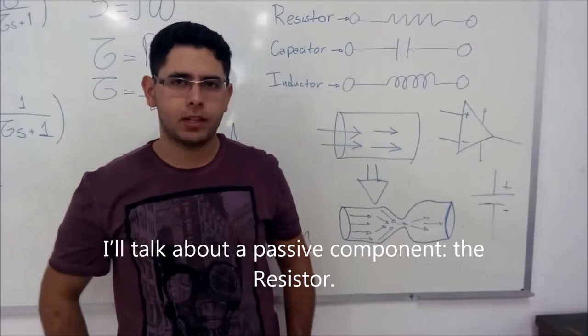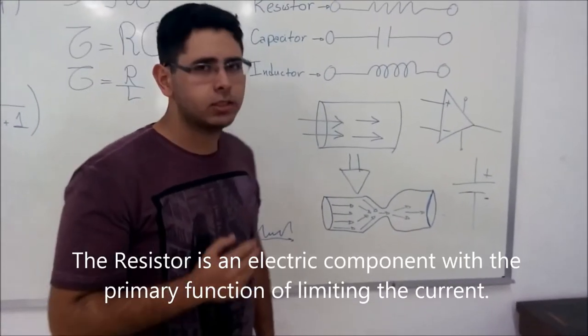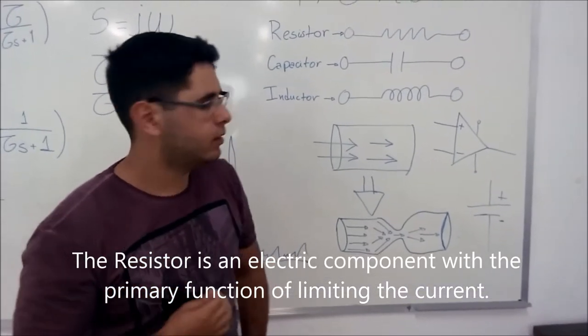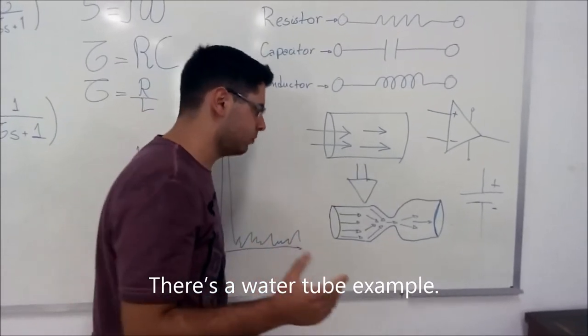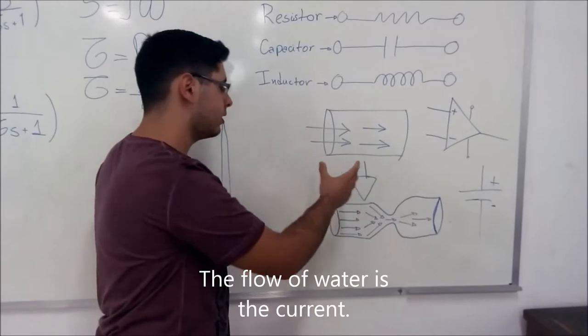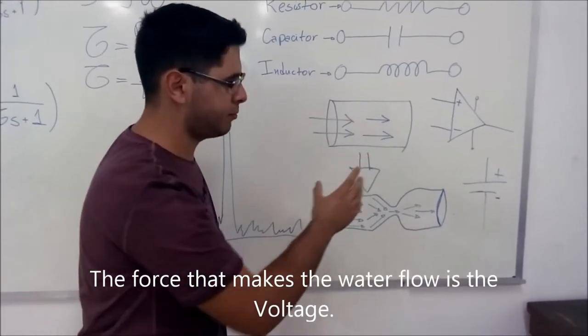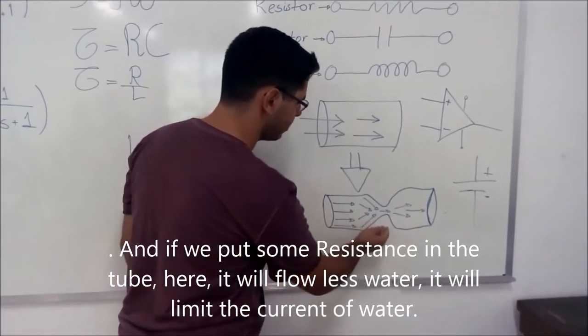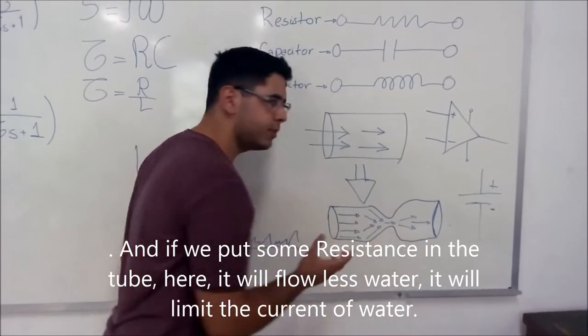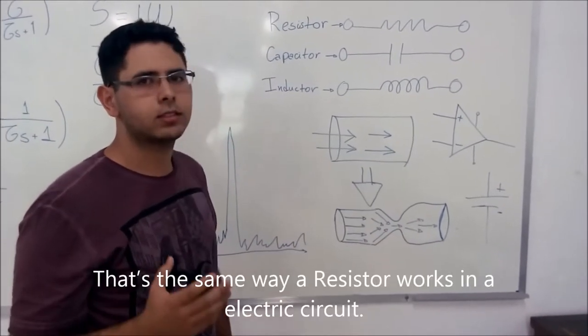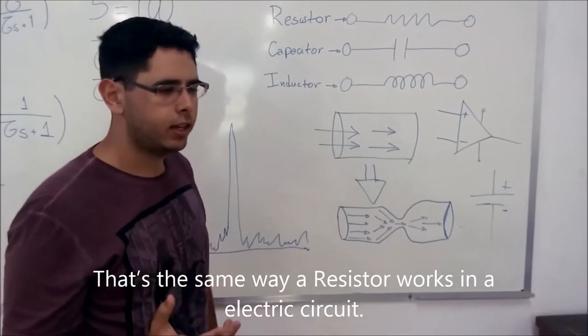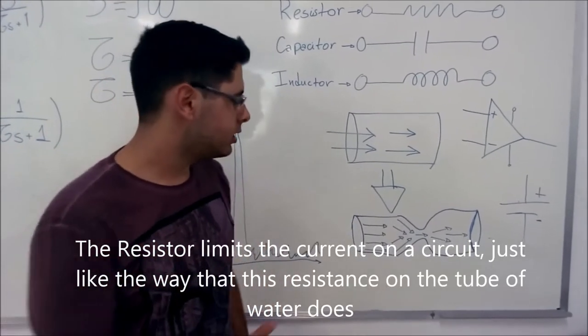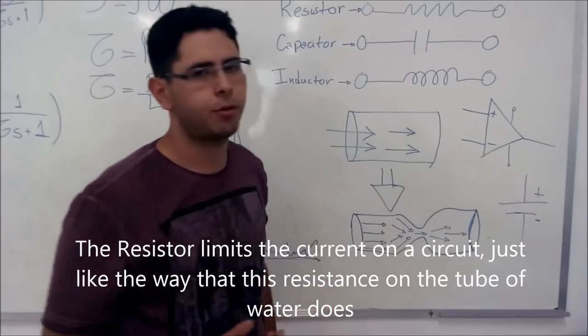Let's talk about a passive component, the resistor. The resistor is an electric component with the primary function of limiting the current. We can use a water tube as an example. The flow of water is the current. The force that makes the water flow is the voltage. And if we put some resistance in the tube, like here, it will flow less water. It will limit the current of water. That's the same way a resistor works in an electric circuit.